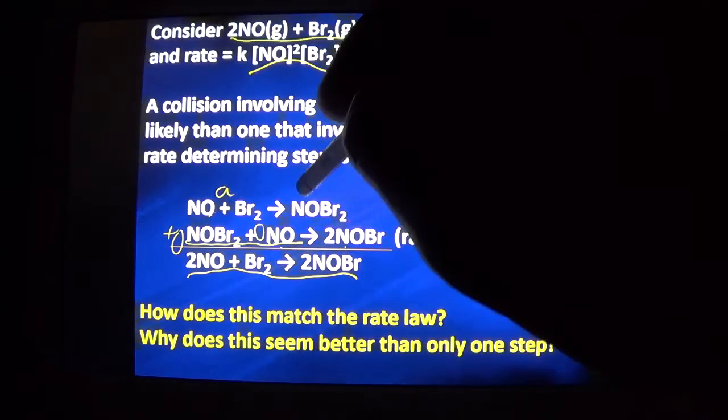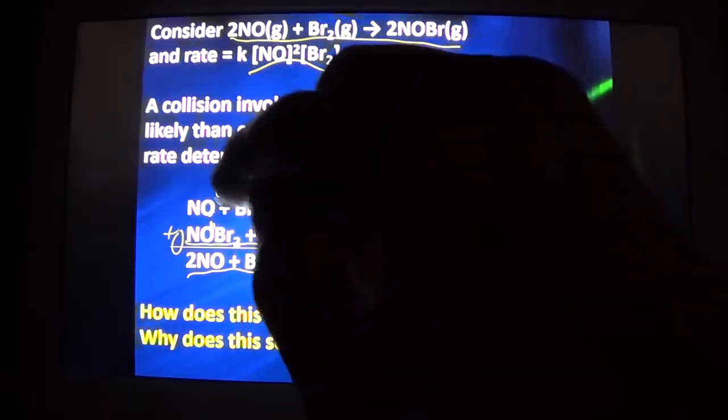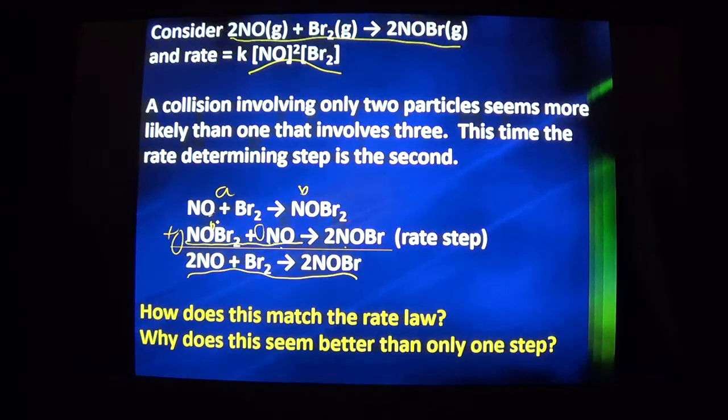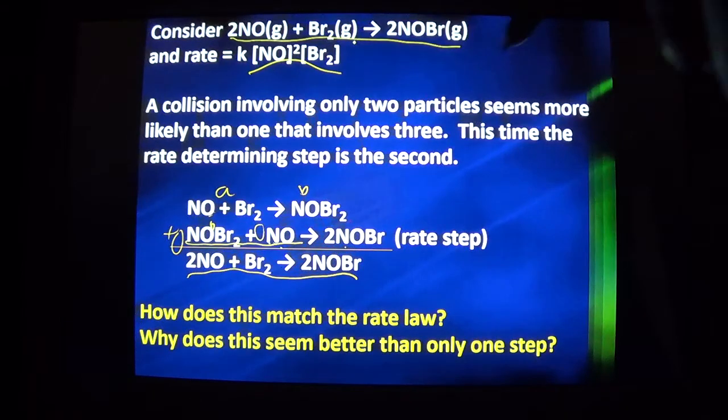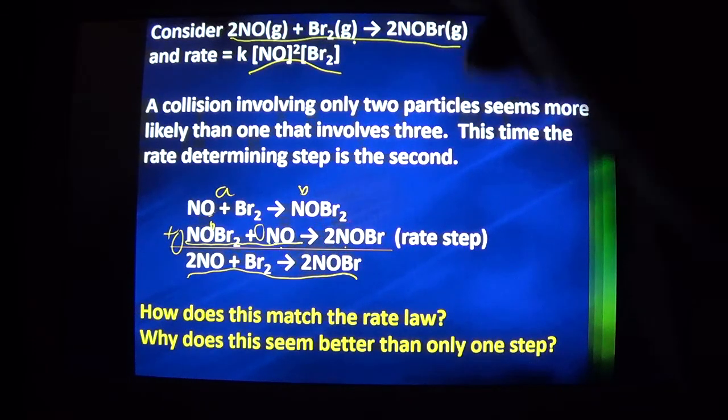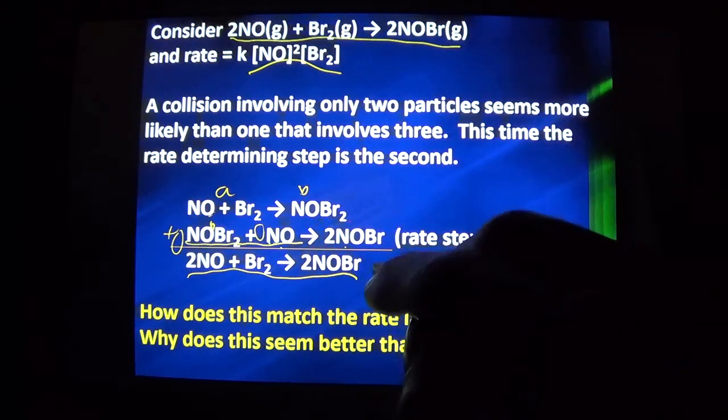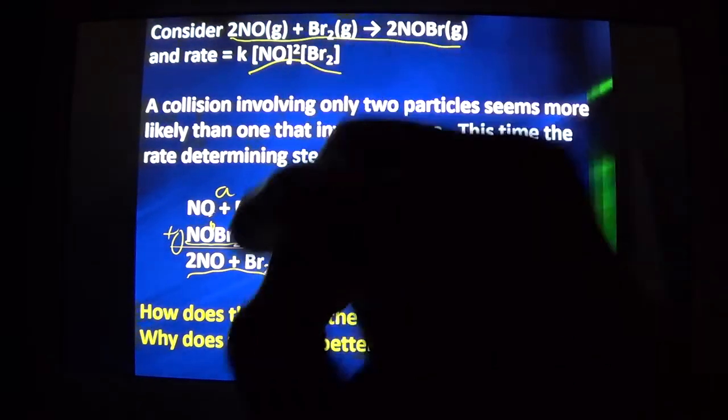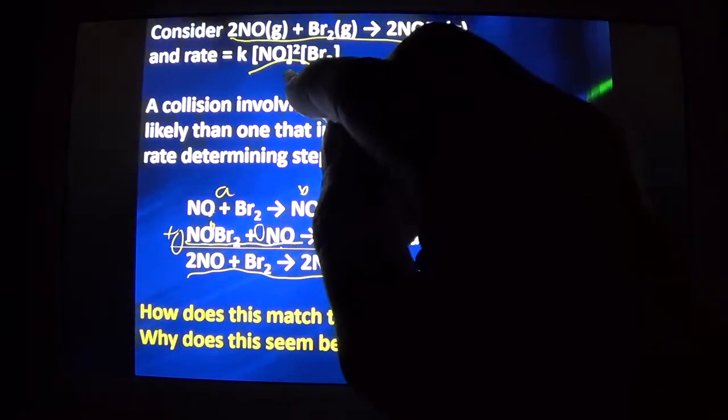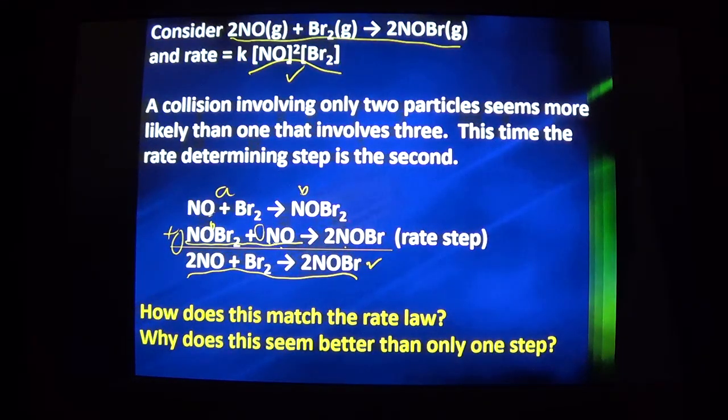We might need to do some substitution. If A equals B, and here's B, then we can plug in A for B. You might need to do some substitution to make it match. But if substituting makes it match, then on those two criteria, you have a good mechanism. Overall equation, check. Coefficients match the order, check. That's what makes for a good reaction mechanism.